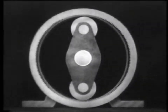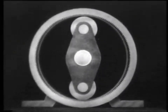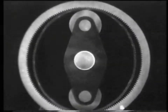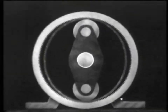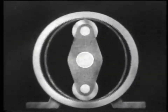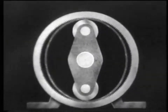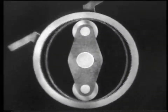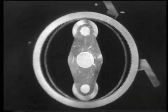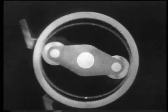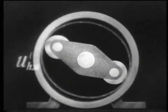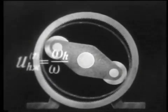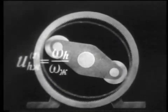To determine the gear ratio, the method of stopping the driver is used, as is customary in conventional planetary gears. In a suspended flexible wheel, the gear ratio from the wave generator to the rigid wheel is equal to the ratio of the diameter of the rigid wheel, or the number of its teeth, to the difference in diameters or the numbers of teeth of the rigid and flexible wheels.